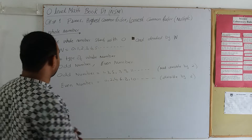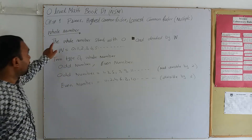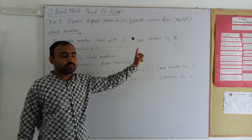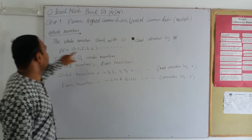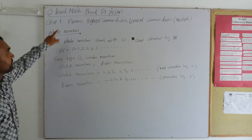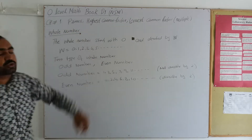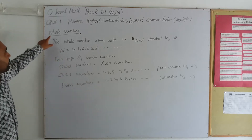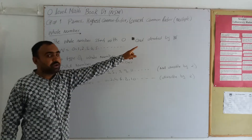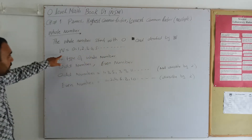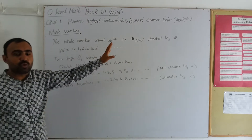The first number topic is whole number. What is a whole number? The whole number starts with 0 and is denoted by W. W = {0, 1, 2, 3, 4, 5, ...} and so on, continuing indefinitely.